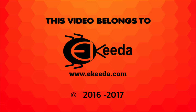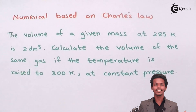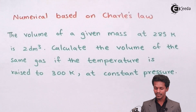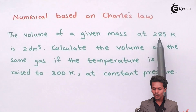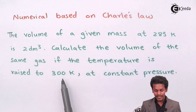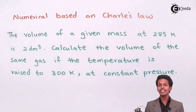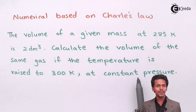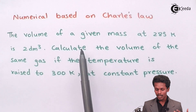So let us do numerical one of Charles Law. The question says: the volume of a given mass at 285 Kelvin is 2 dm³. We have to calculate the volume of the same gas if the temperature is raised to 300 Kelvin at constant pressure. Let us analyze which law this belongs to — the pressure is maintained constant, and the values given are volume and temperature.